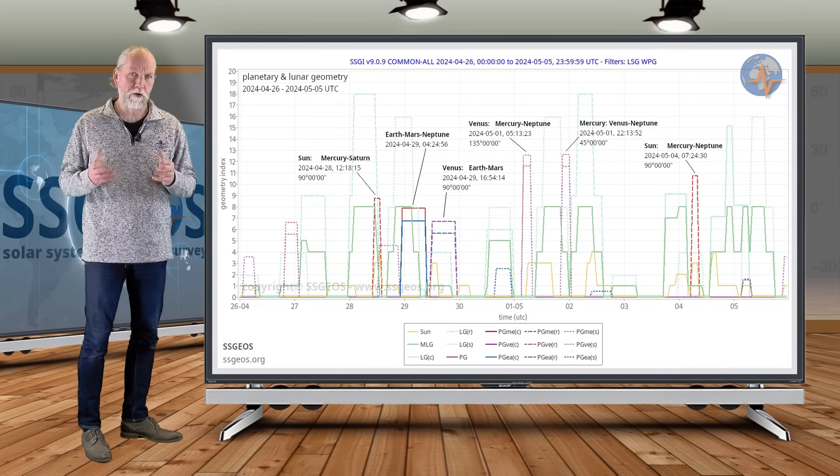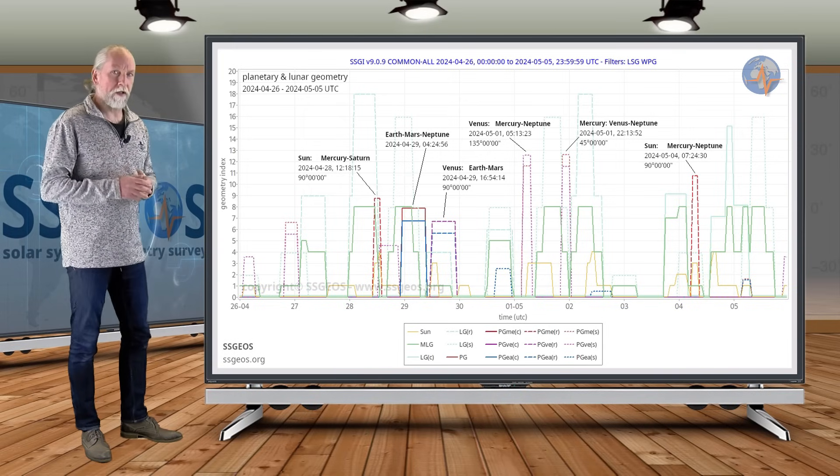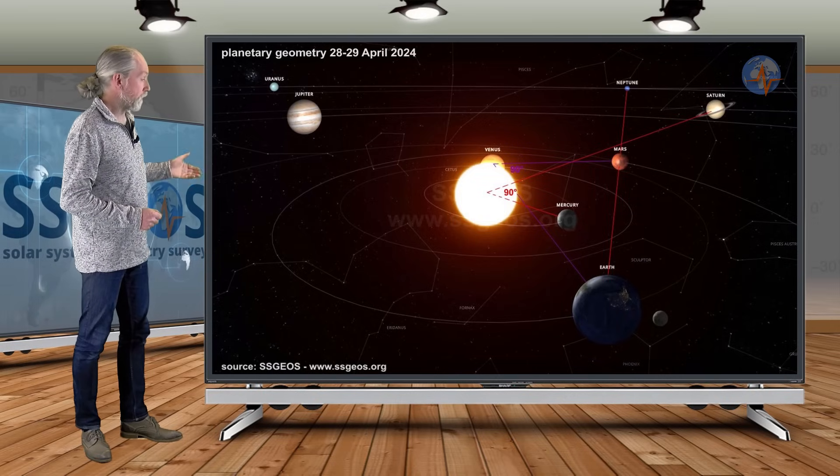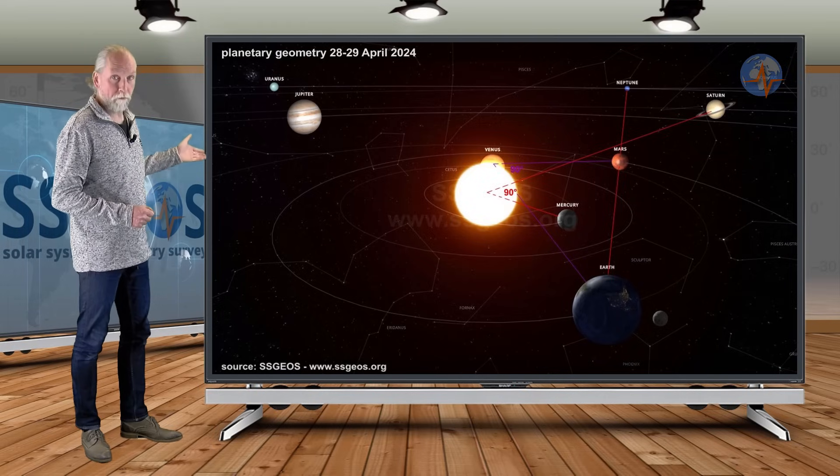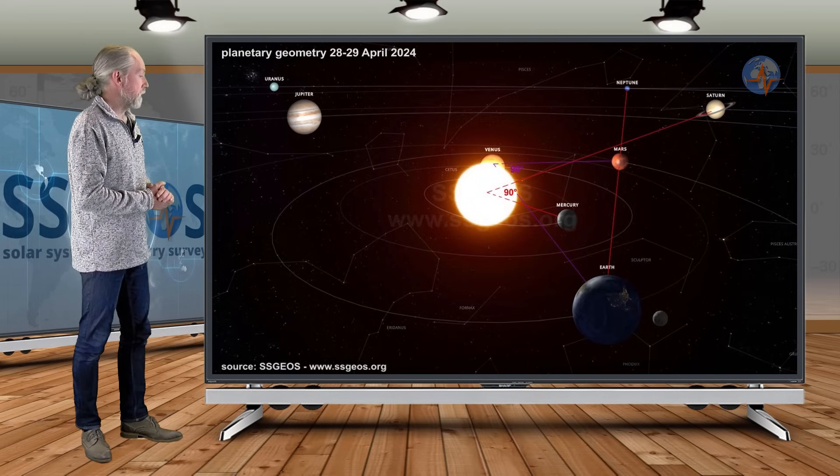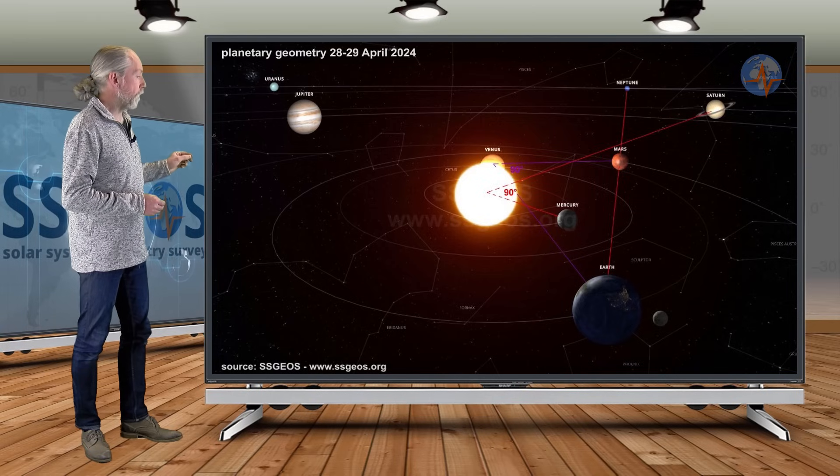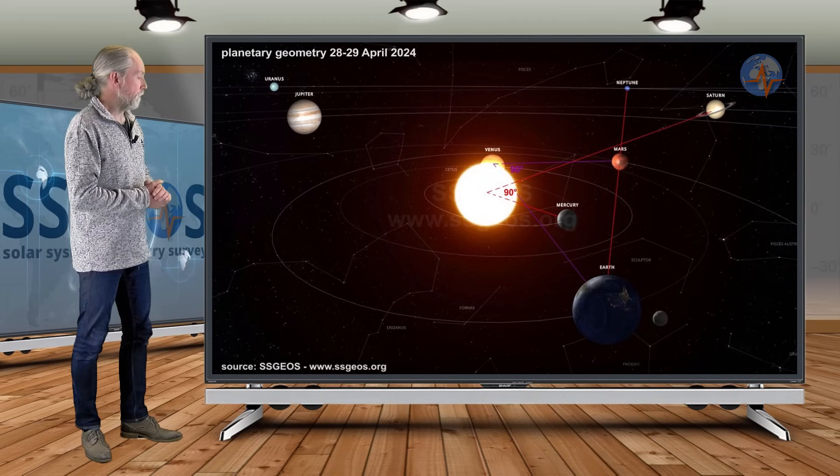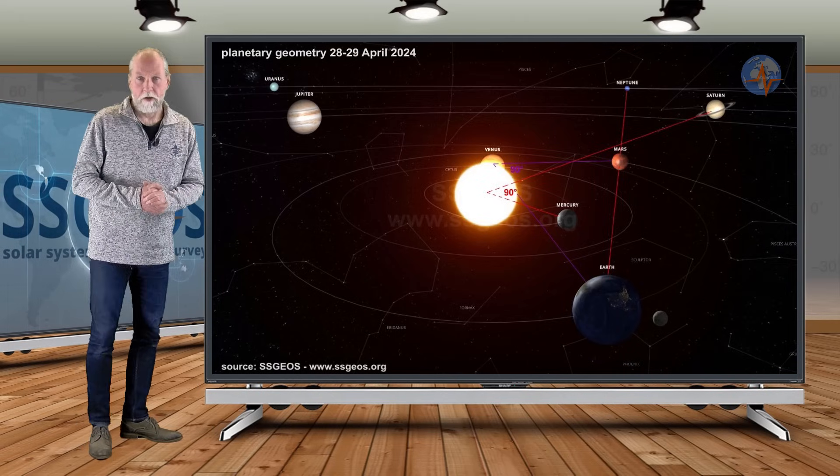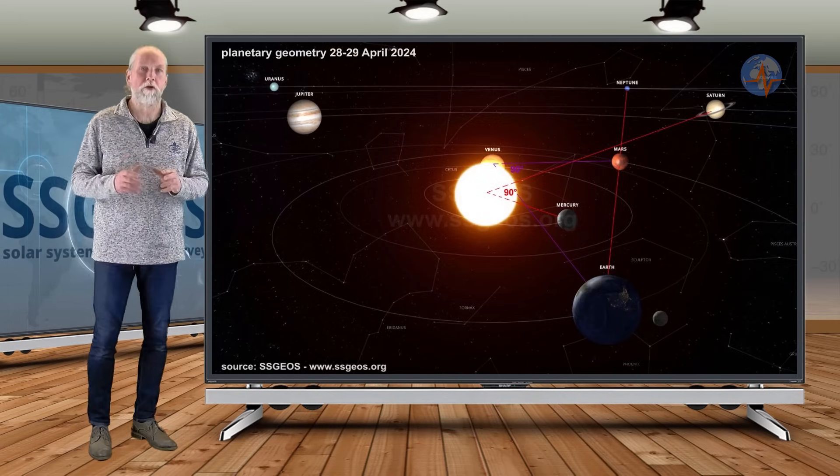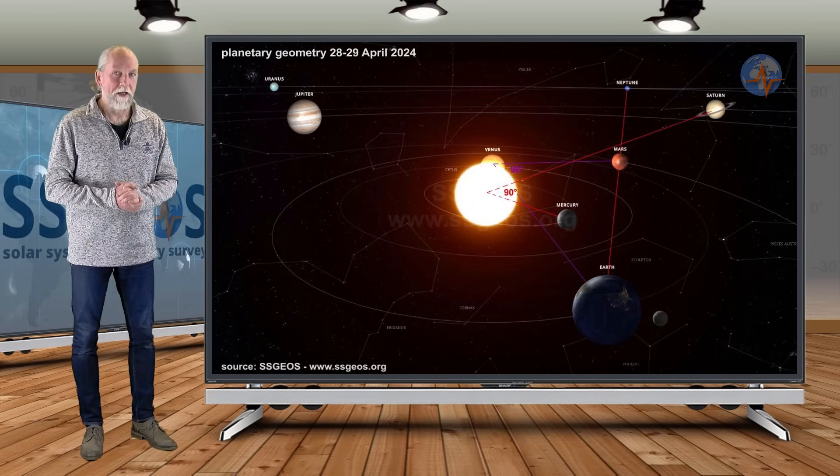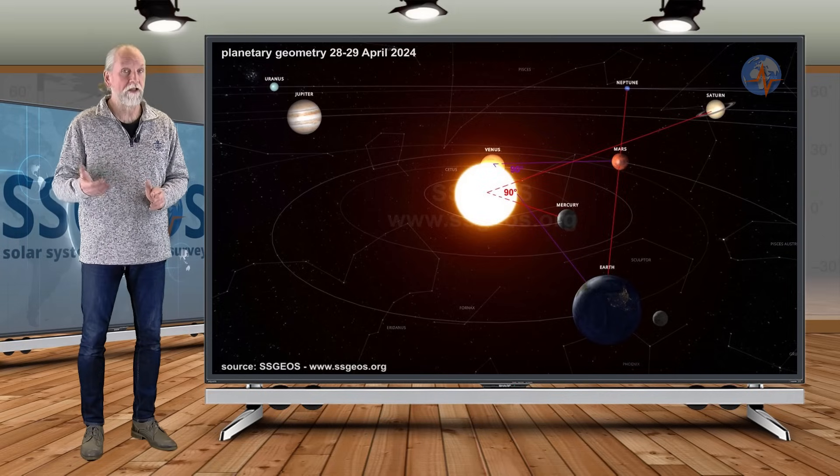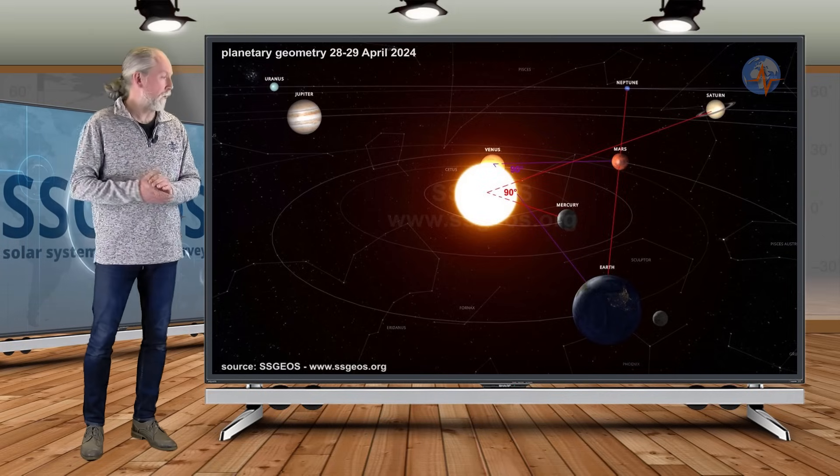Let's have a look at the solar system how that geometry looks like. We see Earth in a conjunction with Mars and Neptune on the 29th. We see the right angle with Mercury, the Sun and Saturn, and also Venus at the right angle with Earth and Mars. This geometry combined can result in an obvious cluster of stronger earthquakes, and there could be a stronger shake like I said in the mid 6, high 6 magnitude range, maybe even magnitude 7, not sure about that.